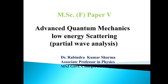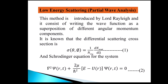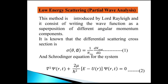The differential scattering cross section is equal to the absolute square of f(θ,φ). Finding the value of f(θ,φ) is the main task, achievable by various methods. Today I will discuss partial wave analysis, which is the quantum mechanical treatment of the scattering problem.